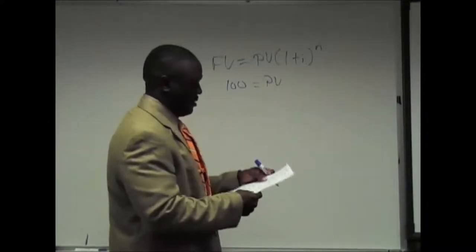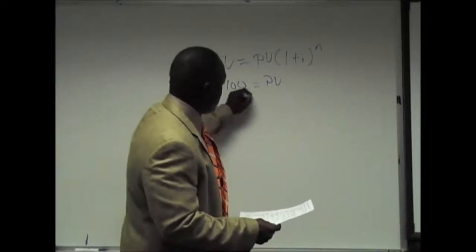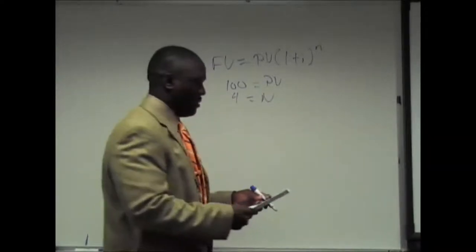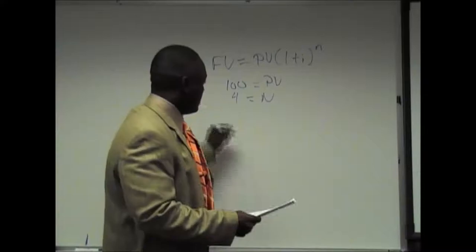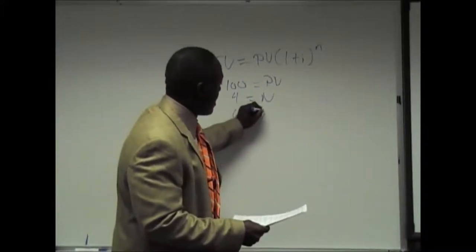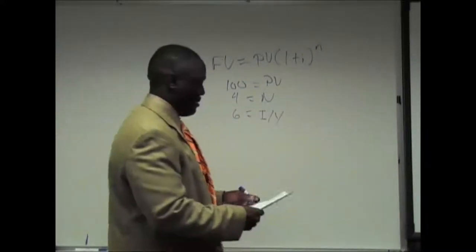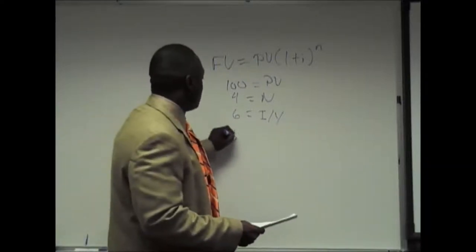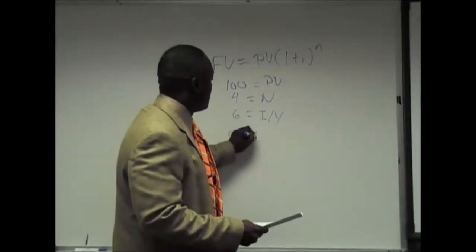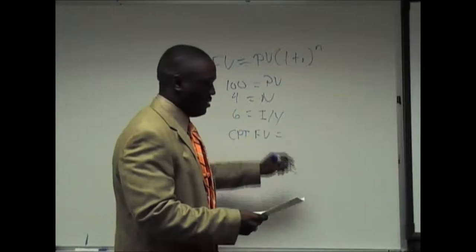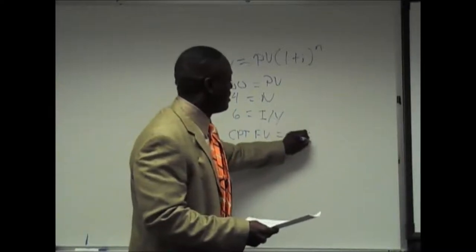How many years? Four years. Four equals N. Then you type in 6 equals IY and you hit the compute button. CPT FV and you should see 126, future value.